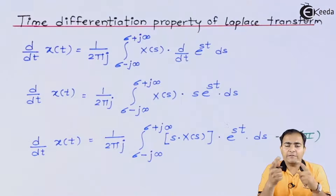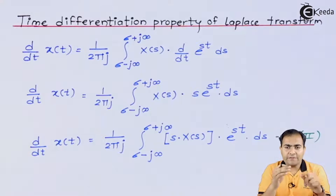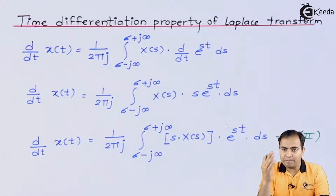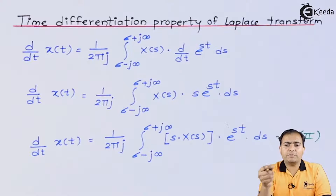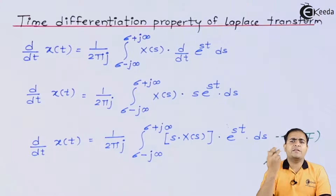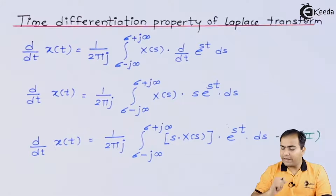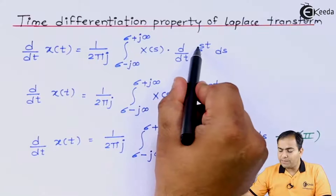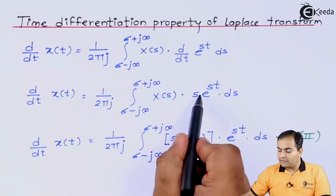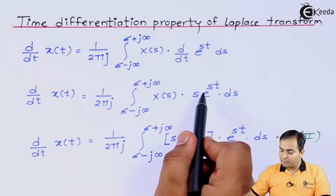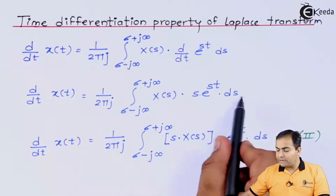Recall the differentiation rule for exponential terms: if we differentiate e^(at) with respect to t, the result is a·e^(at) — the power a is brought out as a multiplier. Here we have e^(st) where s is the power, so after differentiation s comes out and e^(st) remains as it is. Since the whole integration depends on s, s can be factored out.